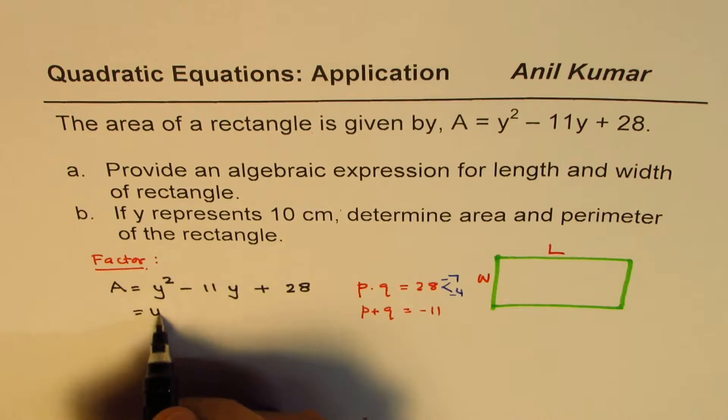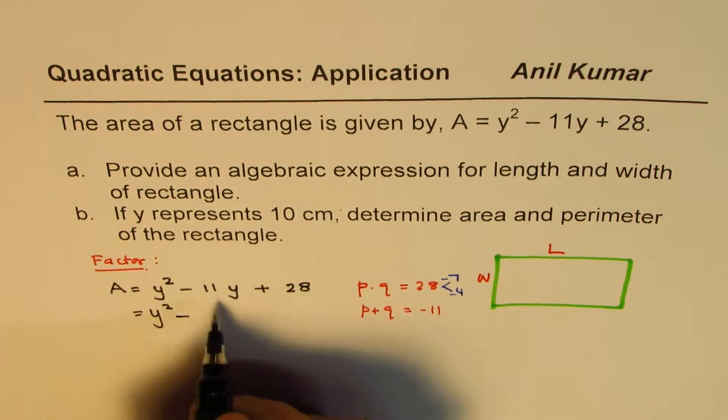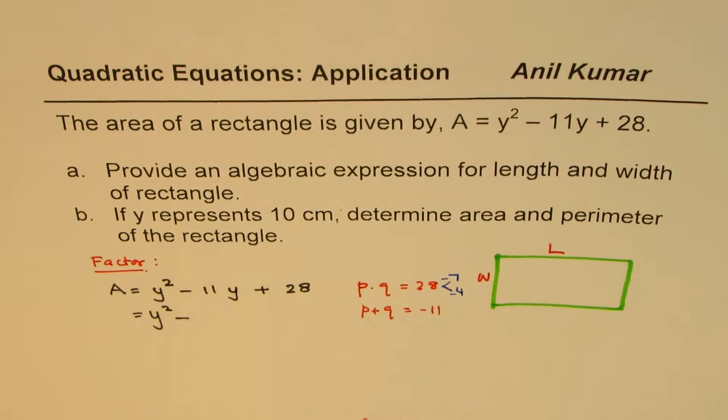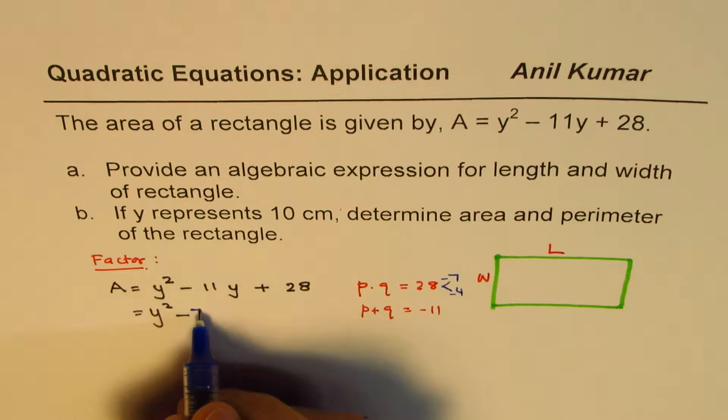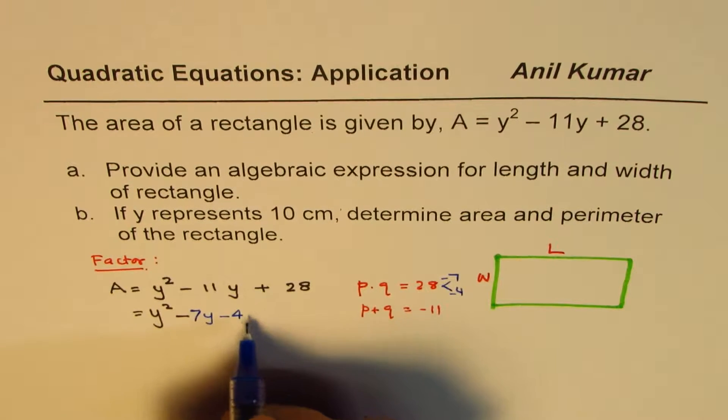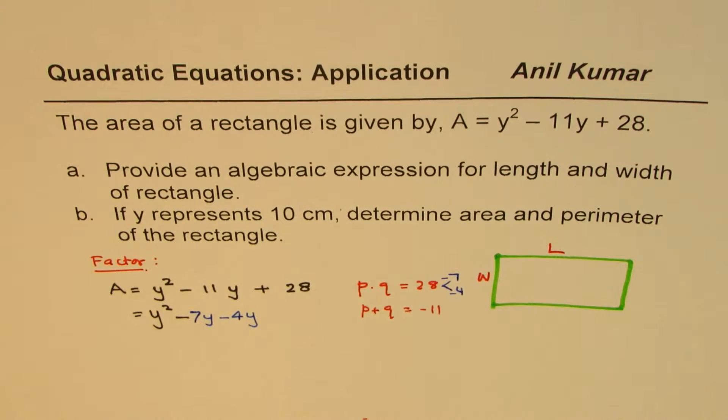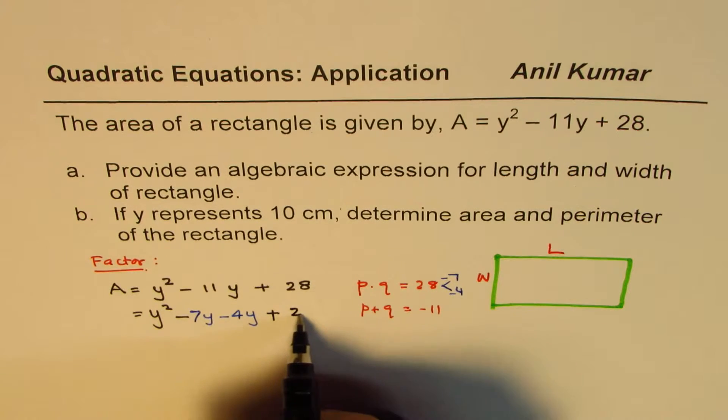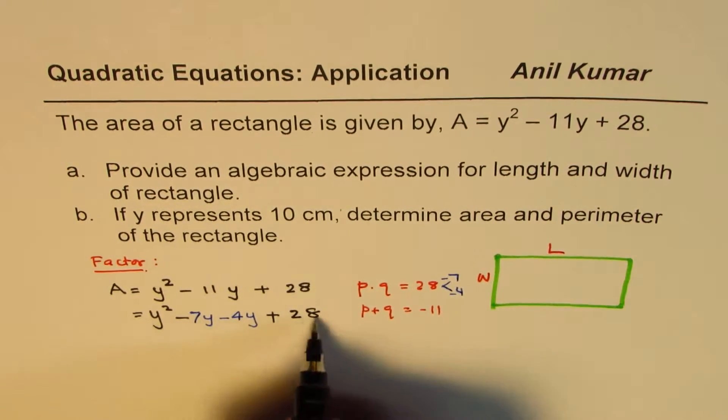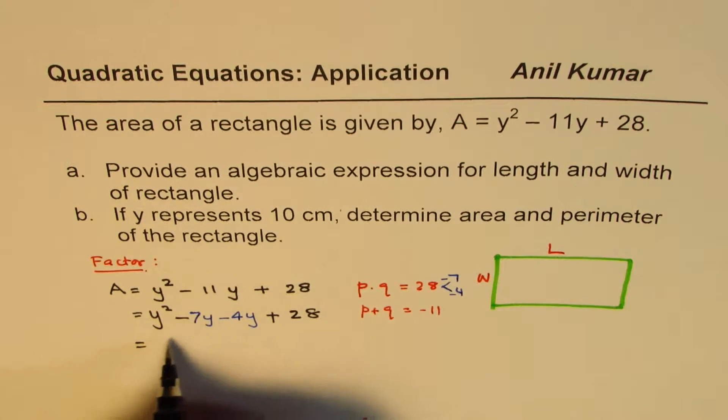So what we will do here is, we'll write this expression as Y squared minus 7Y minus 4Y plus 28. So that is how we actually split this number and then factor further. Now that gives us four terms.